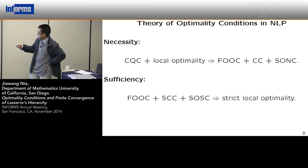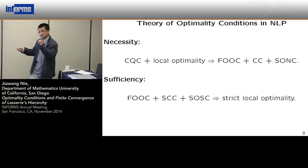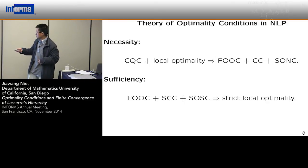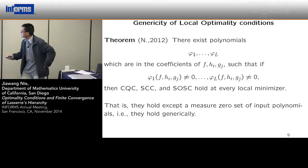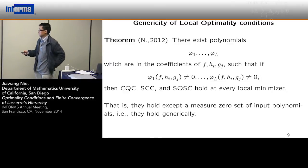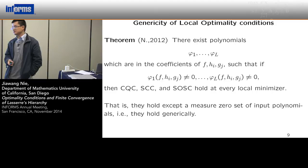As you can see, there is a gap here: complementarity versus strict complementarity, and the second order necessary condition versus the second order sufficient condition. How often does this gap occur? Actually, here is the result: in the generic case, all those sufficient conditions are satisfied.